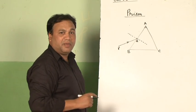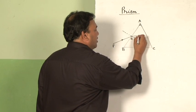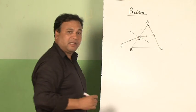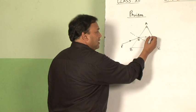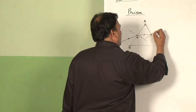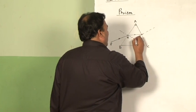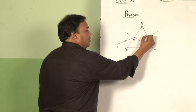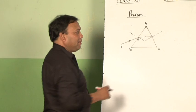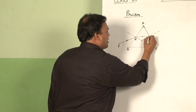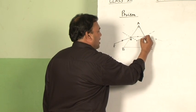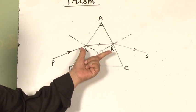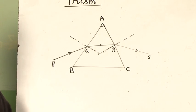Since the light ray is travelling from rarer to denser medium, it bends towards the normal and travels inside the prism. One more refraction takes place at surface AC. At AC also, we draw one more normal. These two normals meet at a point. From this point, again one more refraction takes place. Since the light ray is travelling from denser to rarer medium, it bends away from the normal. PQ is the incident ray, QR is the refracted ray inside the prism, and RS is the emergent ray.